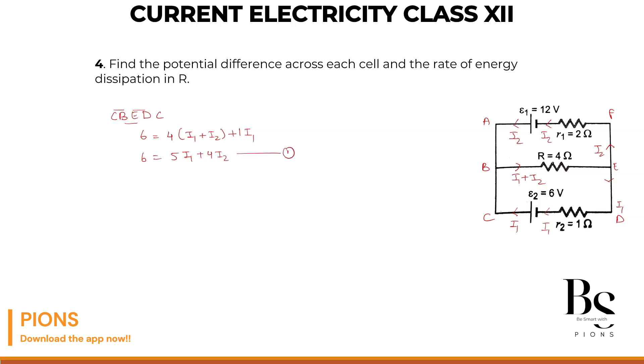Next let's take the upper loop ABEFA. I always go from positive of the battery to negative so things become consistent. If you're following any other YouTube channel, textbook, or school teacher, be very careful - the signs will be different because their convention is different. My convention is different, so whatever makes it easy for you, just follow that convention.